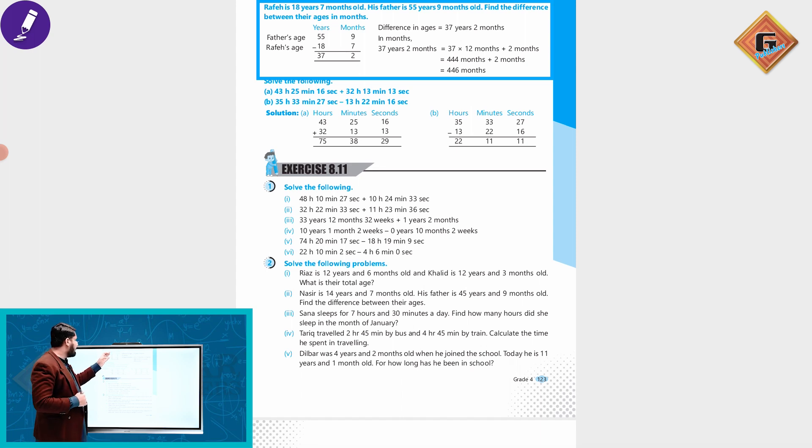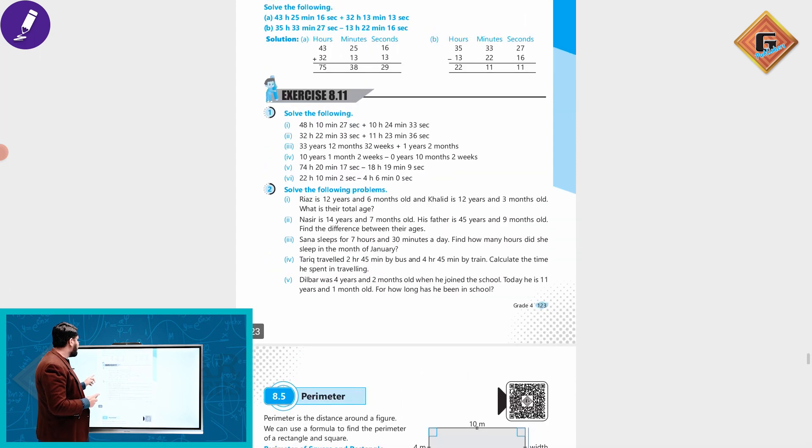How many years? 37 years and 2 months. Now 37 years and 2 months, you have to convert to months. We know that one year equals 12 months, so 37 times 12 months plus 2 months equals 446 months. This is the required answer.